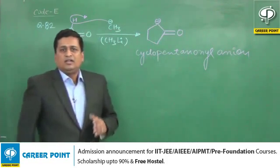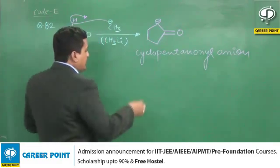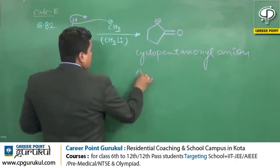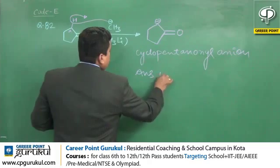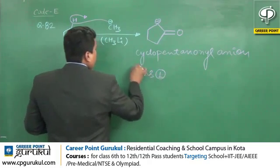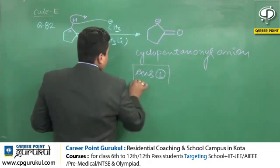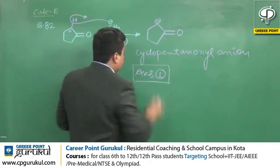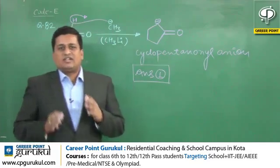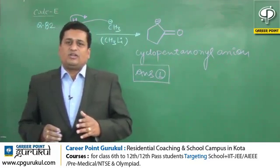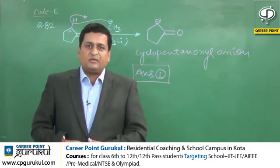There are 4 options given. When you read Code E, you will find cyclopentanol written in option number one. That's why the correct answer to this question is answer number one. Thank you.